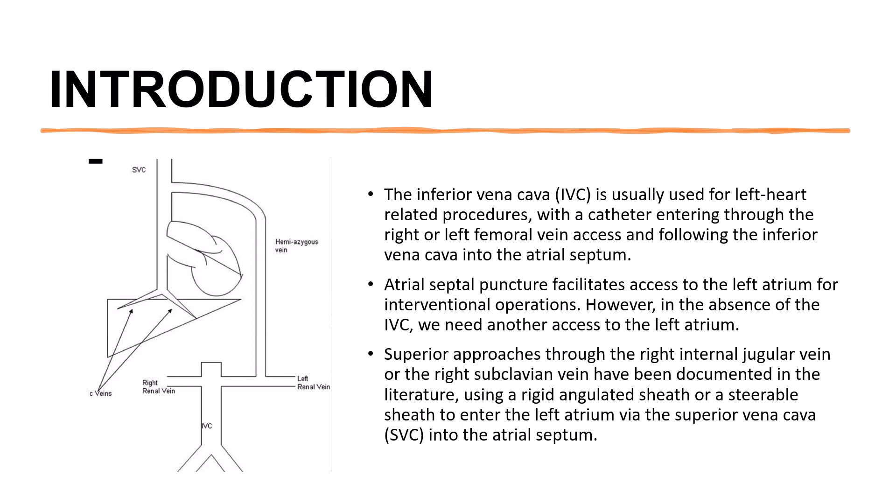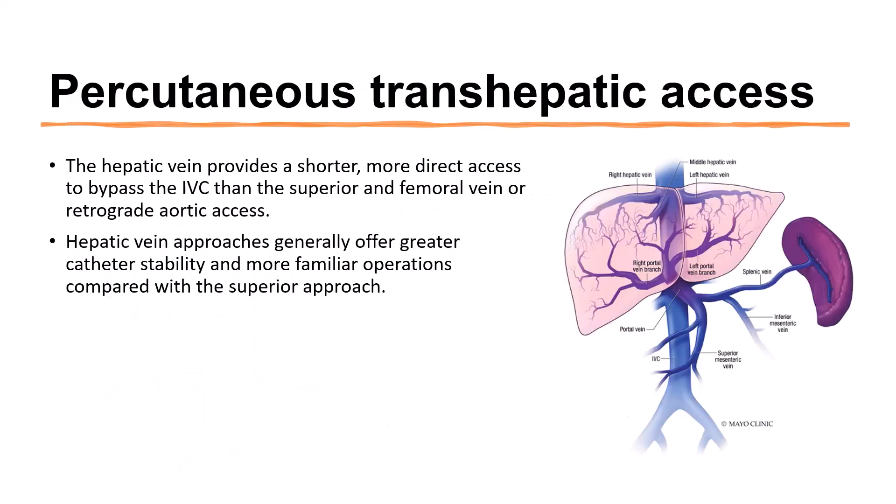The hepatic vein provides a shorter and more direct access to bypass the IVC than the superior, femoral vein, or retrograde aortic access. Hepatic vein approaches generally offer greater catheter stability and more familiar operations compared with the superior approach.